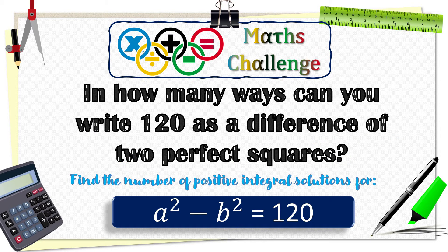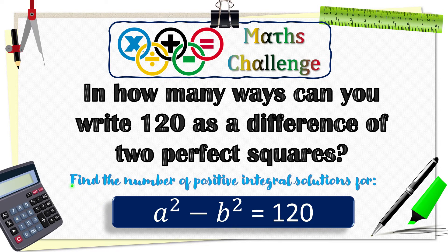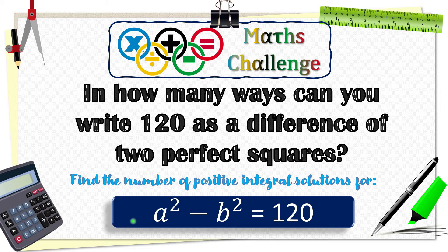And did you realize this question is the same as finding out the number of positive integral solutions for the equation a square minus b square is equal to 120.